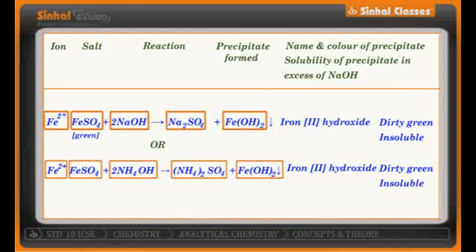Similarly, let us take ferrous sulfate, FeSO4, treated with excess NaOH. In the beginning, you get sodium sulfate, Na2SO4, along with ferrous hydroxide, Fe(OH)2 — a precipitate which is light green in color. This precipitate, indicated by a downward arrow, is insoluble in excess of sodium hydroxide. We can balance the equation by putting 2 in front of NaOH.